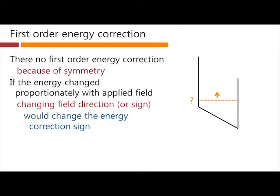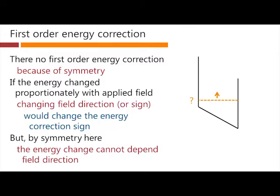Truly, if the change in energy is proportional to the field, then if it's negative for a positive field, then it's positive for a negative field or vice versa. But by symmetry here, the energy change cannot depend on the field direction. This problem here is really not any different from the one where the slope is in the other direction. This is a symmetrical problem to start with. So there can't be any first order correction to the energy. It would have the wrong sign in one direction.